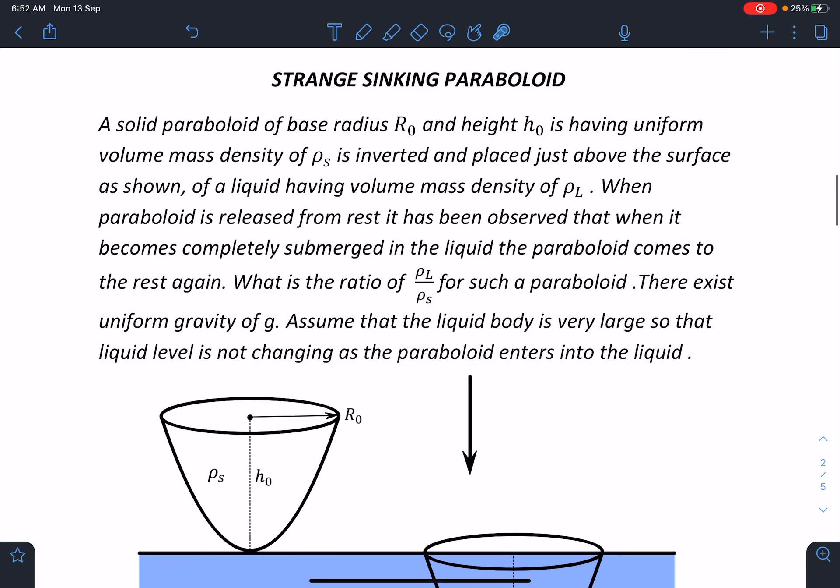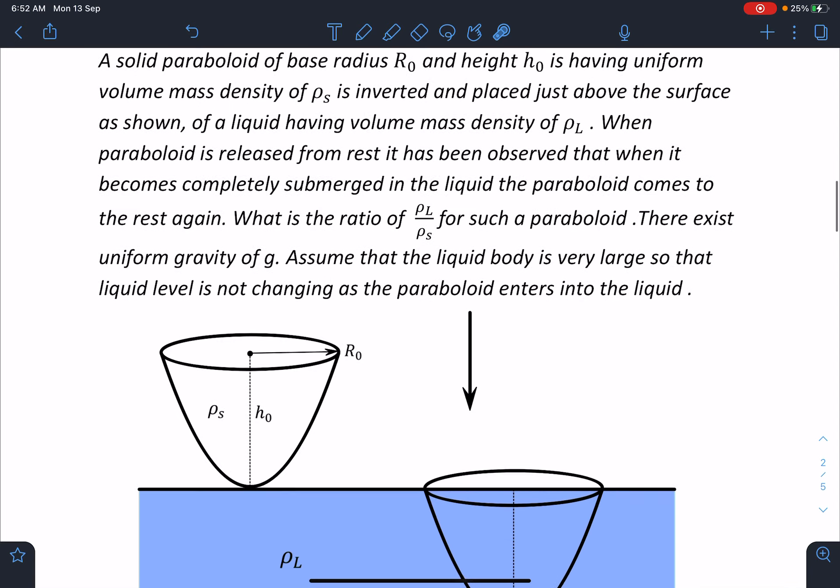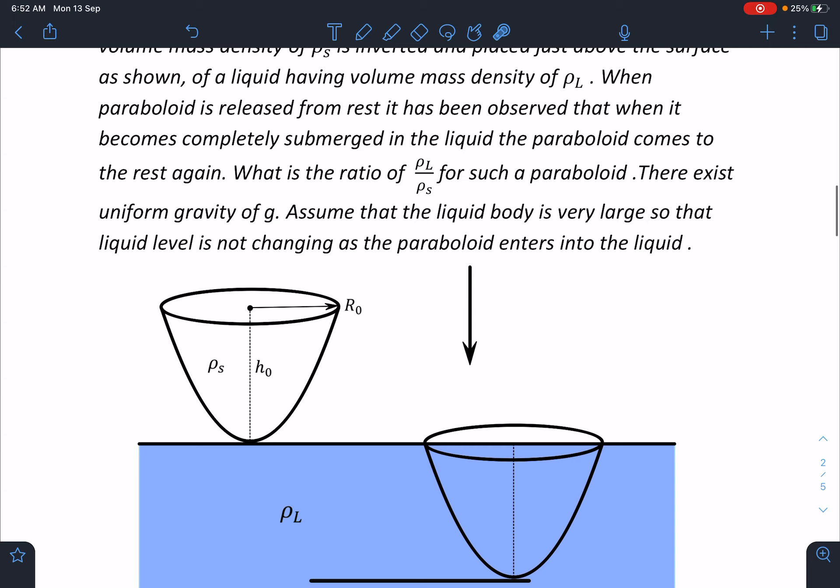So here is the problem statement. A solid paraboloid of base radius r0 and height h0 is having uniform volume mass density of rho s is inverted and placed just above the surface as shown of a liquid having volume mass density of rho l. When paraboloid is released from rest, it has been observed that when it becomes completely submerged in the liquid, the paraboloid comes to rest again. What is the ratio of rho l by rho s for such a paraboloid?